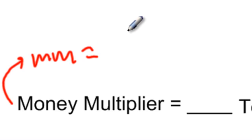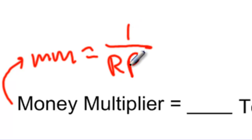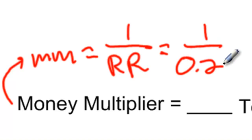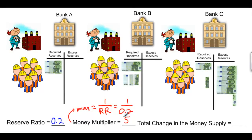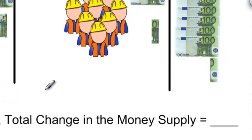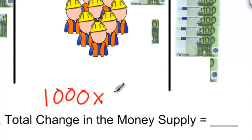The money multiplier is found by dividing 1 by the reserve ratio. In our economy the reserve ratio is 0.2, so the money multiplier is 1 divided by 0.2, which equals 5. This means that even though there's only 1,000 euros of hard currency in this economy, the total money supply can be a multiple of that 1,000 euros due to the fact that commercial banks are only required to keep 20% of their total deposits on reserve at any given time. Money is being created through the lending and borrowing from banks' excess reserves and the new deposits created by any money that is lent and borrowed. The total change in the money supply following the 1,000 euro change in deposits will therefore be 1,000 euros times the money multiplier of 5, which gives us 5,000 euros.